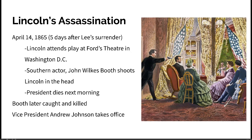A major blow to this process was Lincoln's assassination — the first president in U.S. history to be assassinated, coming just five days after General Lee surrendered. On April 14, 1865, Lincoln attended a play at Ford's Theater in Washington, D.C. A Southern actor named John Wilkes Booth snuck into their theater box and shot Lincoln in the head. The president was dead by the next morning. Booth was later caught and killed.